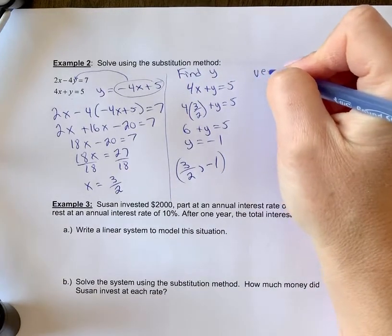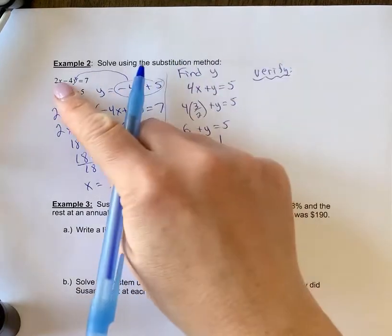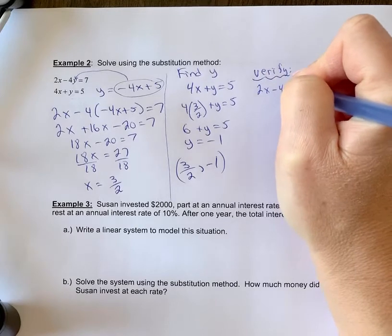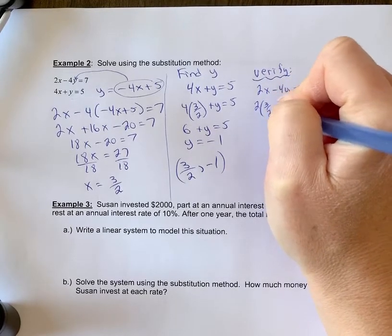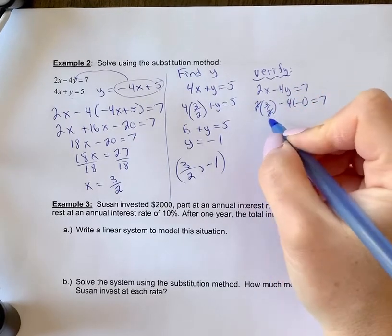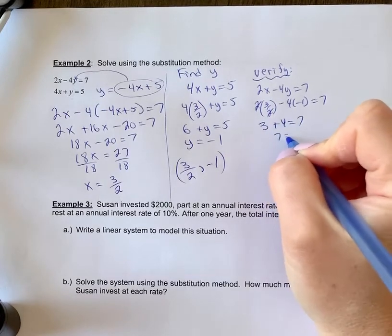Let's verify one more time so that we can practice what that would look like with the fraction. When we're verifying the first equation 2x minus 4y equals 7, we have 2 times 3 over 2 minus 4 times negative 1 equals 7. The 2s just cancel out, so you have 3 plus 4 equals 7. 7 equals 7.